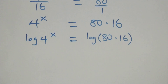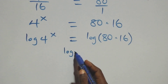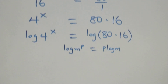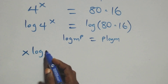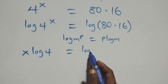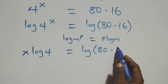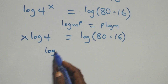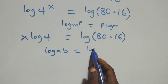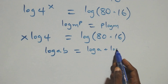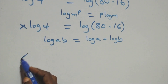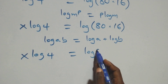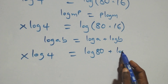Here we apply the power rule of logarithms. When we have log m raised to power p, this is the same as p·log m. So we have x·log 4 equals log(80 times 16). Then we apply the product rule: log(a times b) equals log a plus log b. So x·log 4 equals log 80 plus log 16.